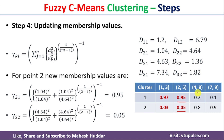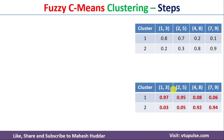We need to update similarly for the third and fourth data points. The third data point membership values and the fourth data point membership values are calculated accordingly. This is how the updated membership table looks. The meaning of this updated table is: for data point (1,3), the probability of belonging to the first cluster was 0.8 and is now updated to 0.97, while the probability of belonging to the second cluster is now 0.03. The same applies to all other data points.